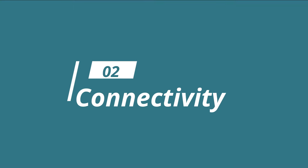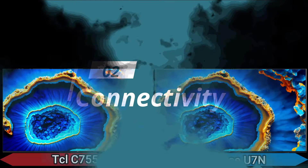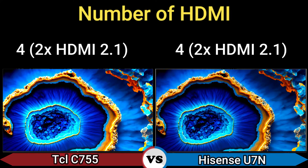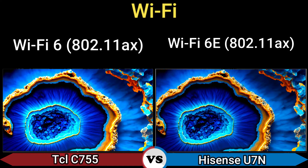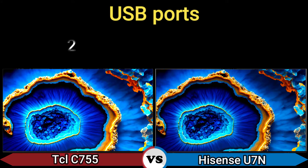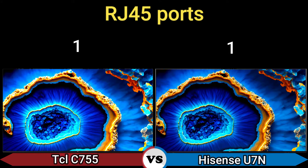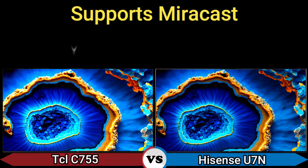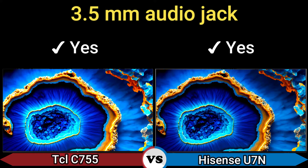Part 2 – Connectivity. Number of HDMI ports: 4 vs 2, including HDMI 2.1. Wi-Fi: Wi-Fi 6 (802.11ax) vs Wi-Fi 6E (802.11ax). Bluetooth: 5.2 vs 5.3. USB ports: 2. RJ45: yes. Supports Miracast: yes. 3.5mm audio jack: yes.